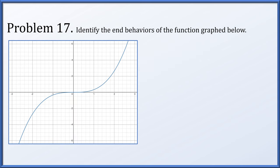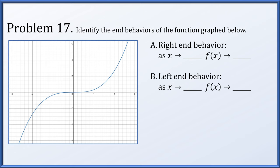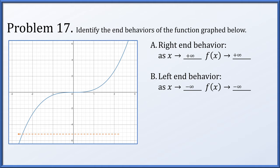Problem 17 is very similar. Identify the end behaviors from the graph, assuming it continues as suggested. For the right end behavior, as x goes to plus infinity, a point slid to the right shows f(x) going up to plus infinity. For the left end behavior, as x goes to minus infinity, sliding the point left shows f(x) going down off to minus infinity.